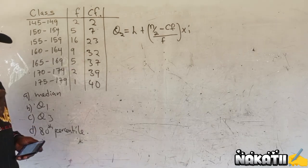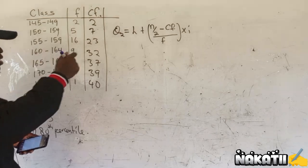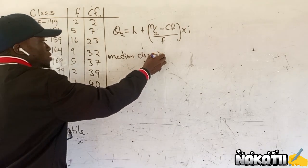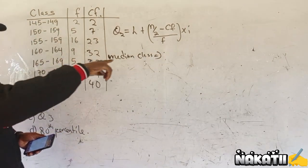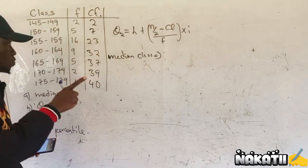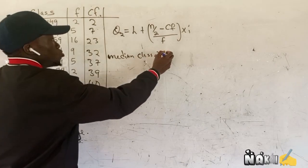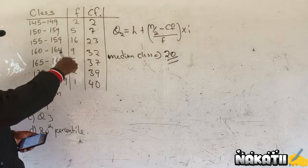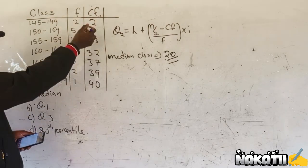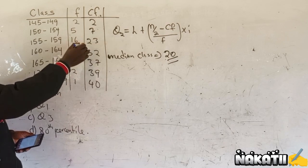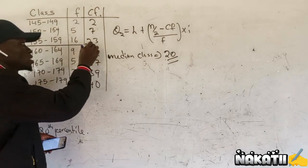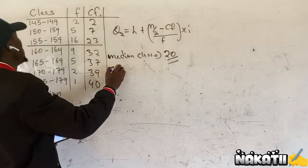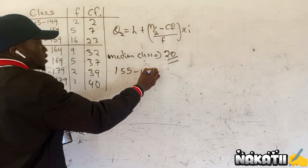What is important here is to get the median class. To get the median class, you take the total frequency and divide by 2 — that is 40 divided by 2. You go to where we have 20 in the cumulative frequency. If you check where 20 is, 20 is inside 23. Therefore, our median class will be 155 to 159.